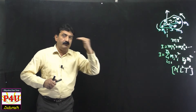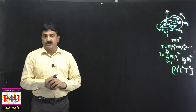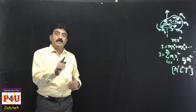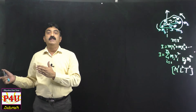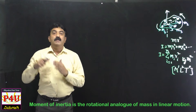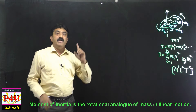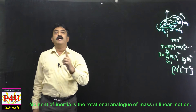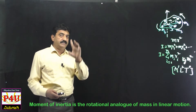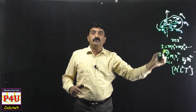Let us proceed further. Moment of Inertia is analogous to inertia in rotational motion, or equivalently, it is analogous to mass in linear motion. Just as inertia resists changes in linear motion, Moment of Inertia will resist a sudden increase or sudden decrease in angular velocity. This Moment of Inertia depends on various factors — first of all, it depends upon the axis of rotation.